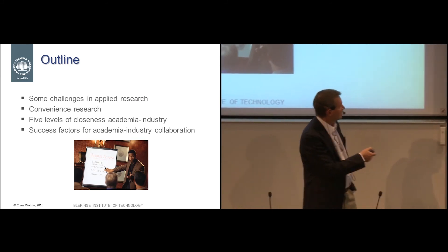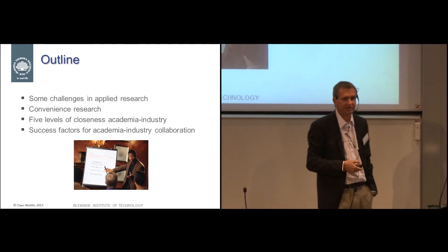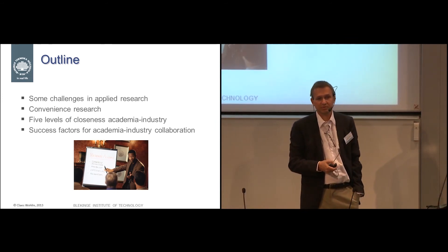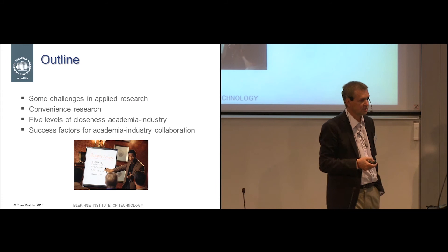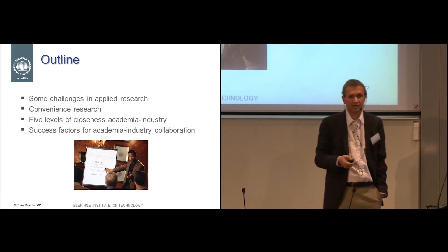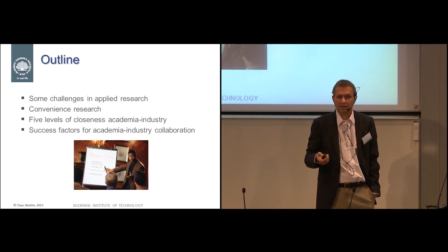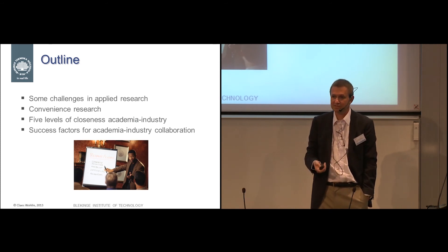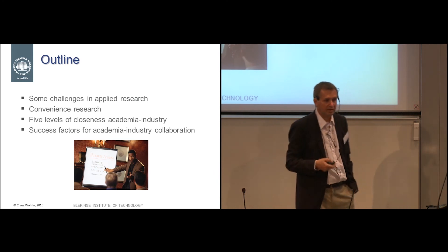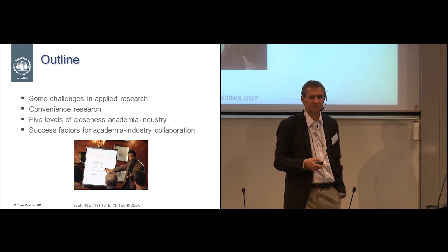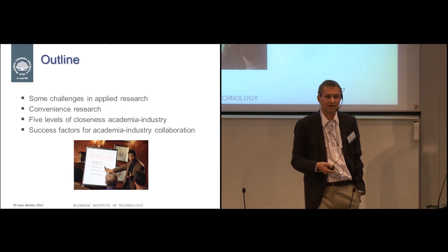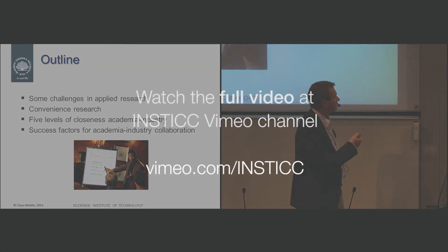Based on that, I would like to introduce what I call the five levels of closeness of industry-academia research — how can we actually work with industry? I've identified five different levels of closeness in terms of collaboration. I'm not going to say that one is better than the other; I'm just going to say there are very different levels in terms of how close you are. You may look at what you think is a reasonable level to be at, and also look at your own research and think: where am I actually in comparison to industry in those levels?